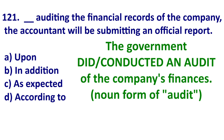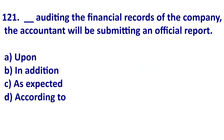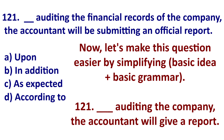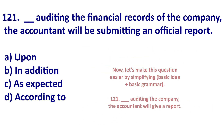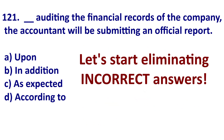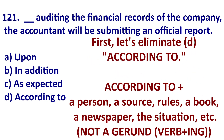For example: the government conducted an audit of the company's financial records. Even though I'm honest with my taxes, I don't want the government auditing me. Now that we have that vocabulary, let's simplify. If we simplify the sentence, we could say: blank auditing the company, the accountant will give a report.